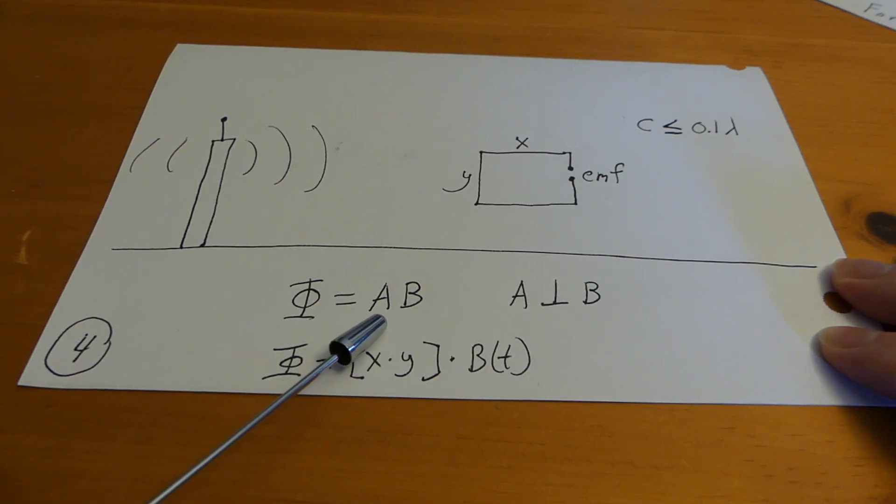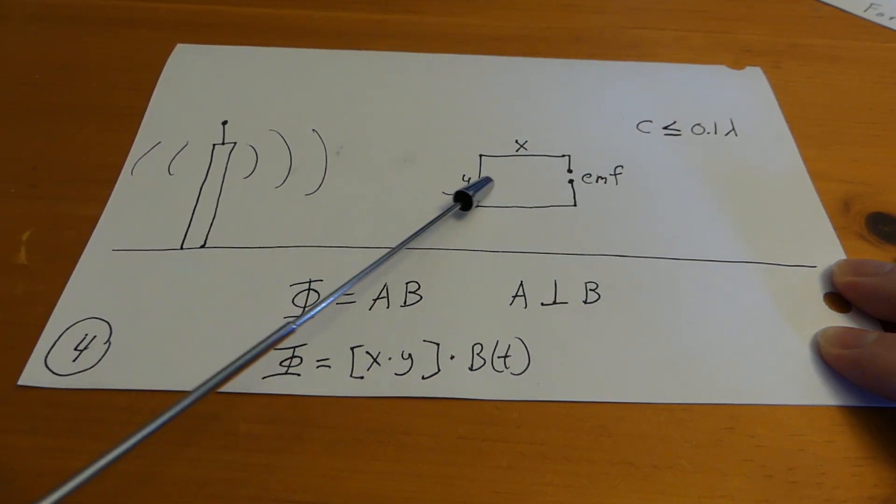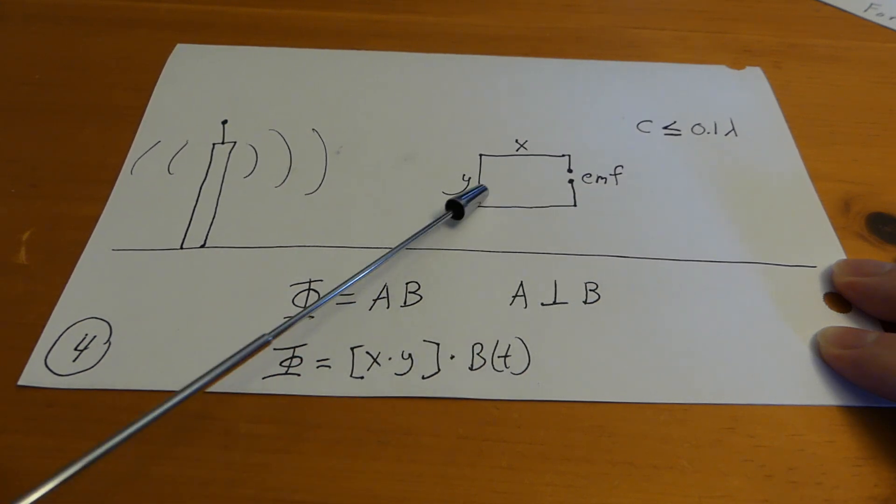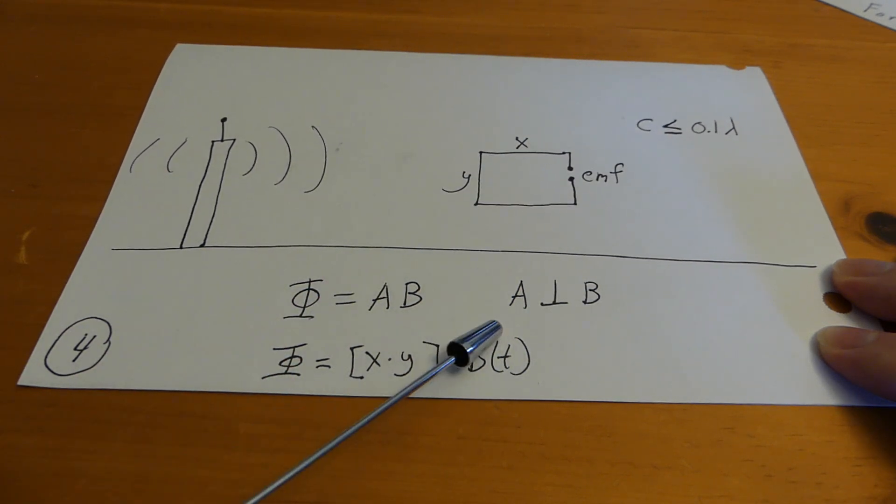And that is equal to the area of the loop times the magnetic field. And this equation is valid as long as the area and the magnetic field are perpendicular to each other. So, if this is the radio signal here, you would have the loop this way and remember the magnetic field lines essentially circle around the transmitting antenna. So, that would make the magnetic fields basically coming out of this page. So, clearly the area and the magnetic field which is again would be coming out of this page are perpendicular. So, this equation holds.